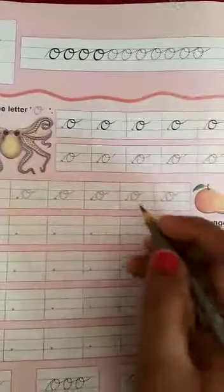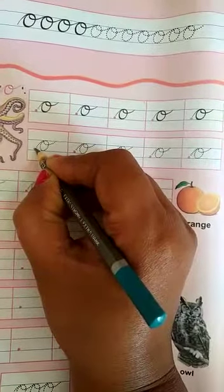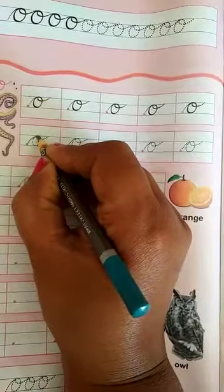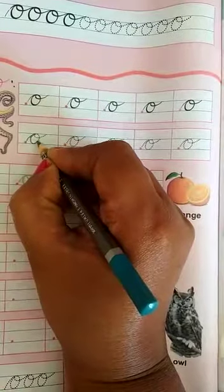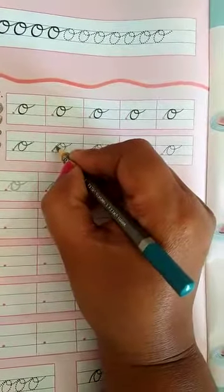And how to write a small cursive O? Small cursive O starts from the third line. Make a slanting line like this, and make a circle like this, and make a small loop like this. This is small cursive O.